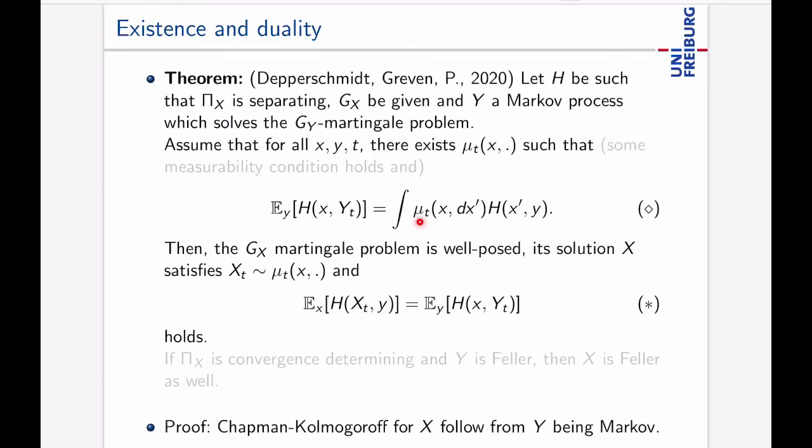Then so if you can find this μ here in fact then μt will be the distribution of the solution of the martingale problem Xt so if you can find this then the GX martingale problem has a solution and since we already have a dual process it's also unique so we have a well-posed martingale problem and the solution satisfies Xt has distribution μt and X and Y are dual.